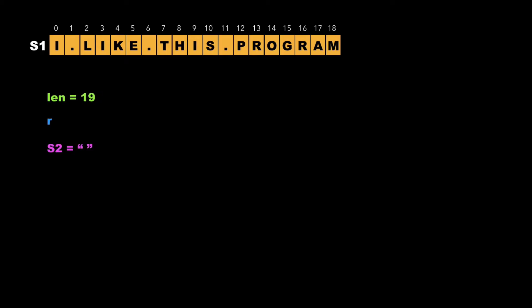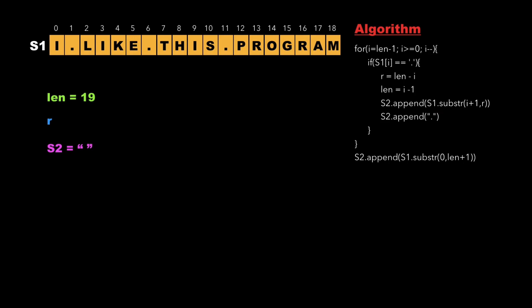The algorithm first traverses the string from the last character to the first character, that is from i equal to length minus 1 down to i equal to 0.